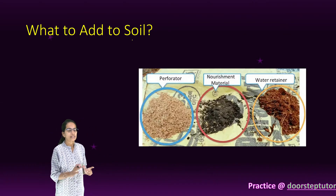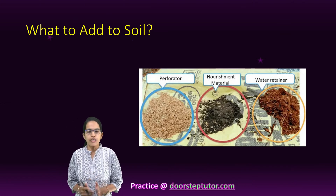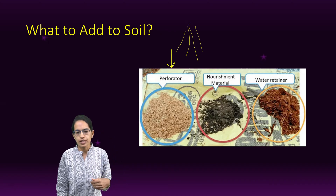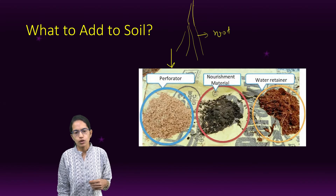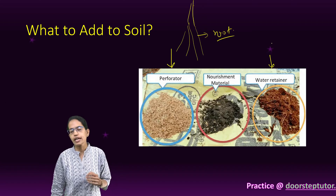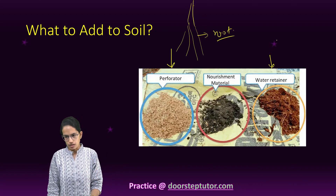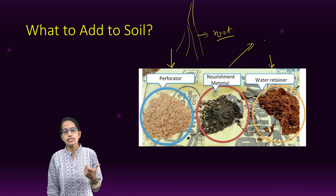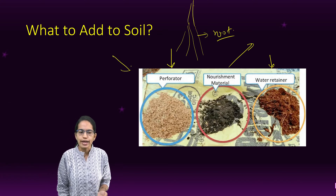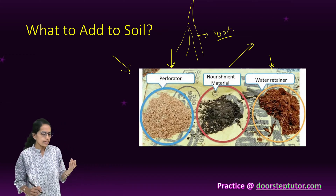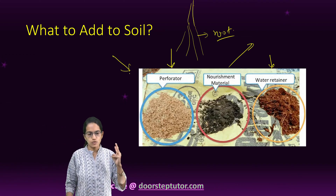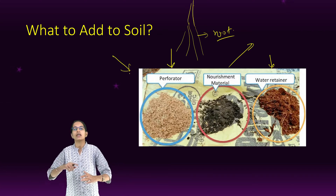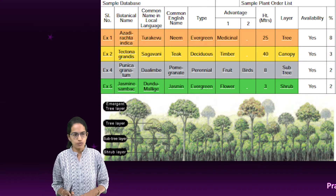Three important things are added to the soil under this technique. First is a perforator, which improves perforation and allows roots to grow very quickly in the soil. Second are water retainers — using coco peat and sugarcane stock — which help the soil maintain adequate moisture. Third is nourishment material, including organic fertilizers and mulch. By adding these to the soil, growth increases and trees grow at a faster pace. If a tree grows successfully for three years, it becomes self-sustaining.